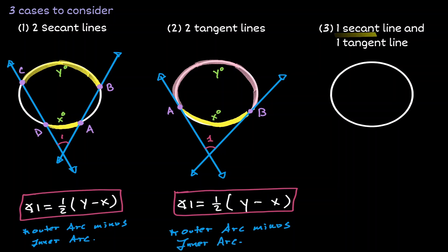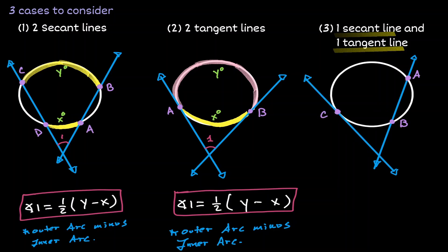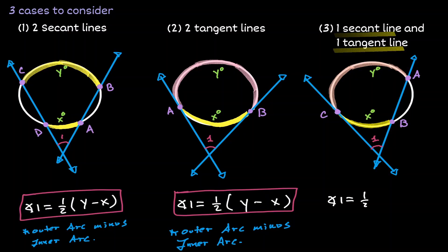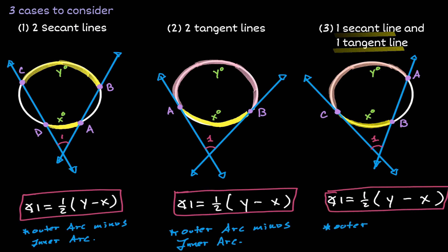Why do we also have a combination of one secant line and one tangent line? Let's draw our secant line and our tangent line. Notice that the intersection again creates an angle — let's call it angle 1. We have two arcs: the inner arc X in yellow and the outer arc Y in pink. The same conclusion holds true: the measurement of angle 1 is equivalent to one half times the outer arc Y minus the inner arc X. So the angle created by the intersection will always equal one half times the difference of the outer arc minus the inner arc.